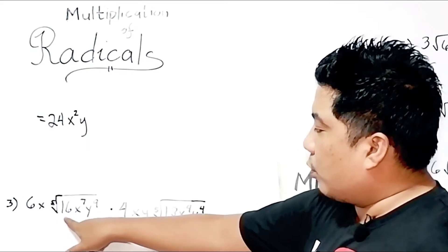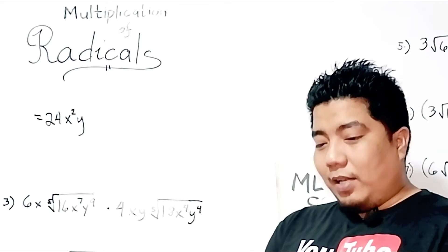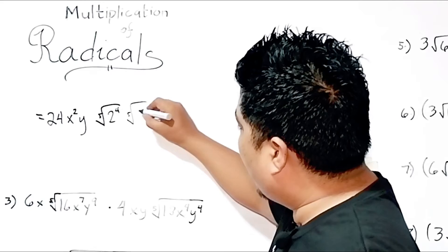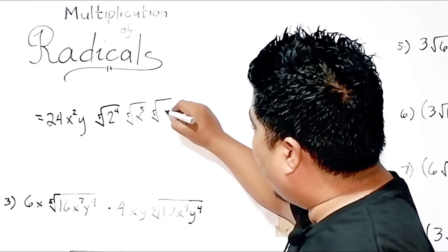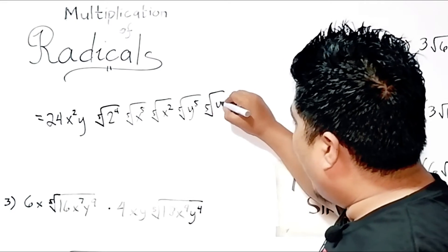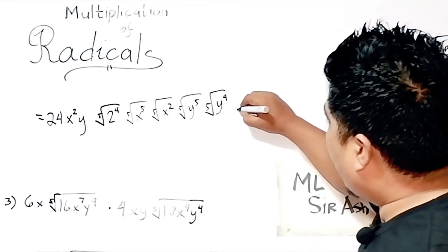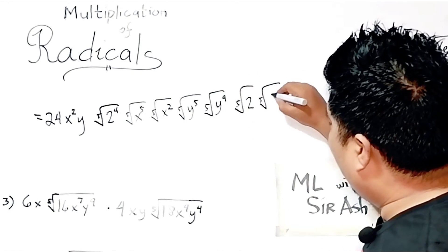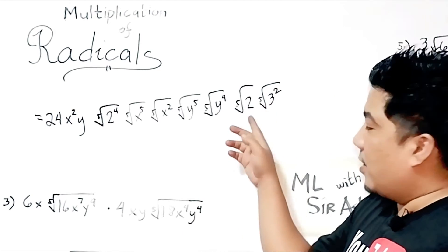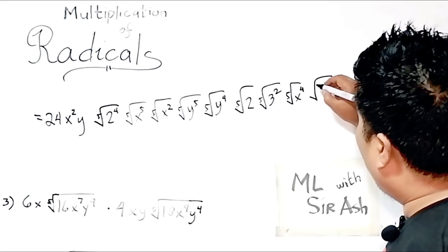Since this is the 5th root, 16 can be broken down. It is 2 to the 4th, so we write the 5th root of 2⁴. x to the 7th becomes the 5th root of x⁵ times the 5th root of x². y to the 9th becomes the 5th root of y⁵ times the 5th root of y⁴. Now for 18: it factors as the 5th root of 2 times the 5th root of 3², since 3 times 3 is 9 and 9 times 2 is 18. Then we have the 5th root of x⁴ and the 5th root of y⁴.